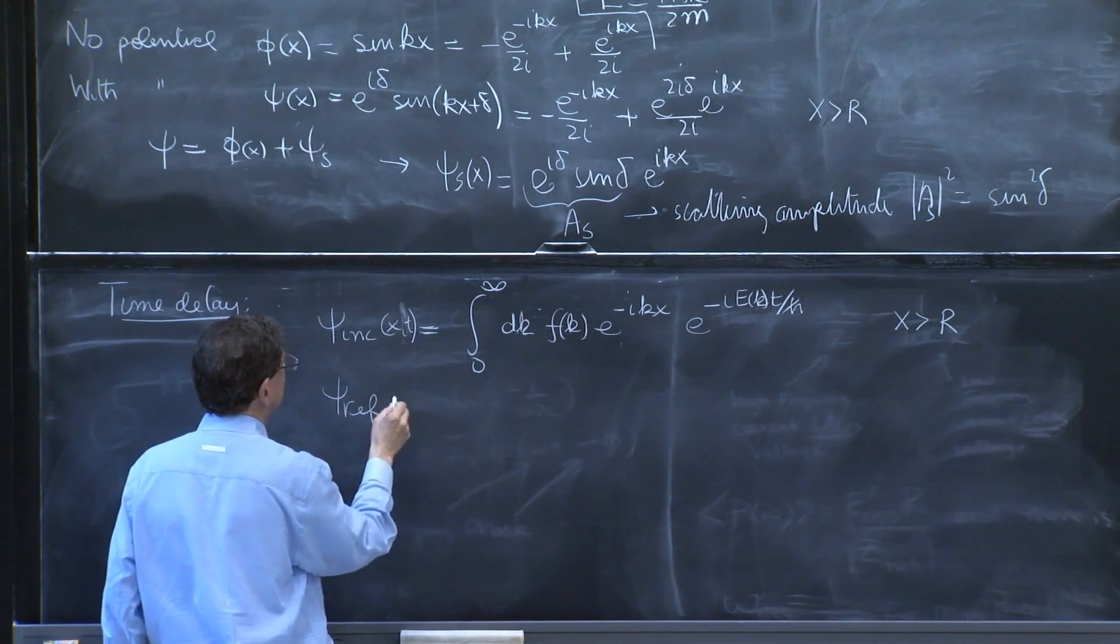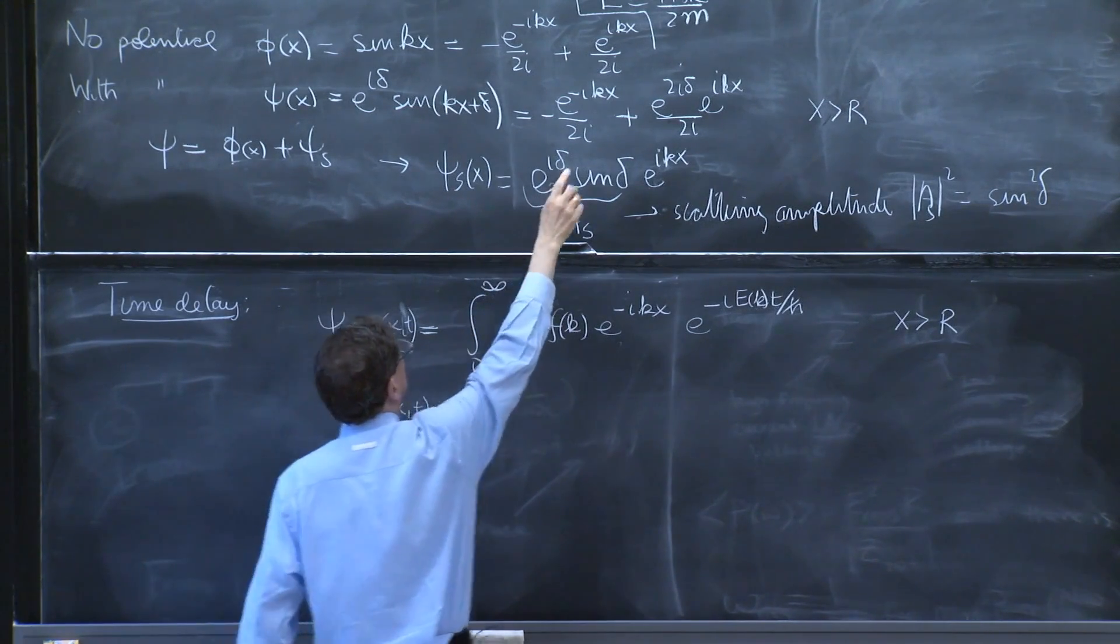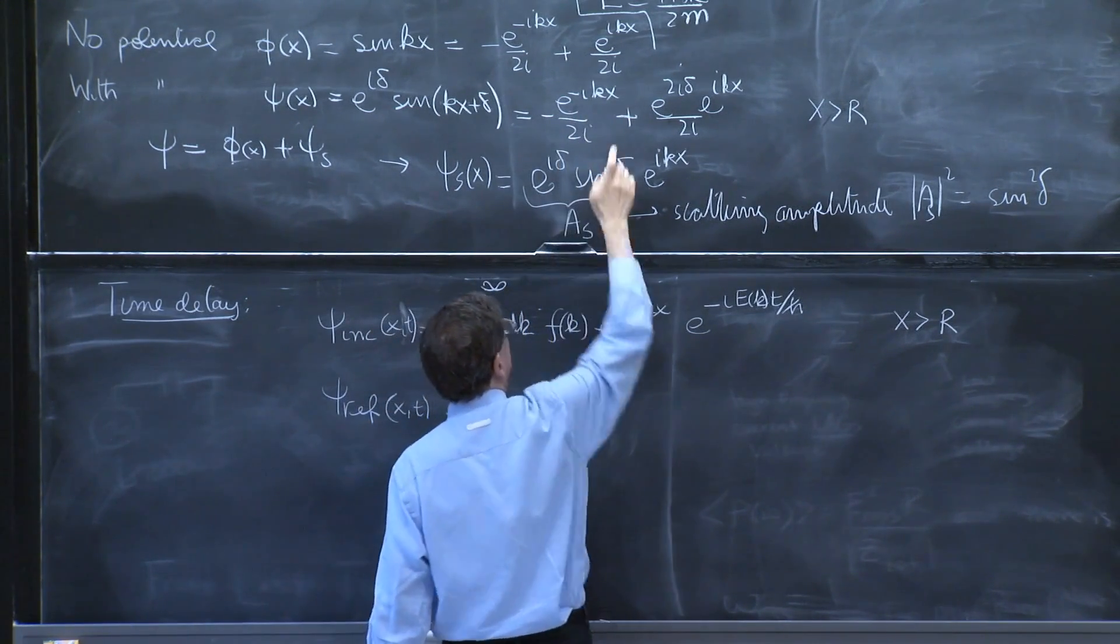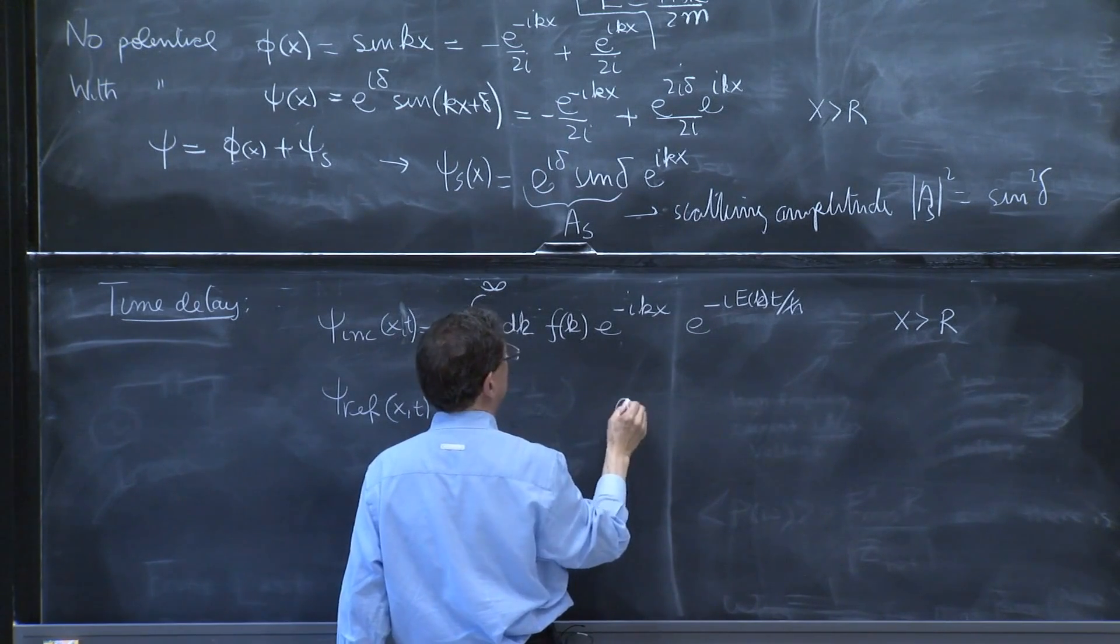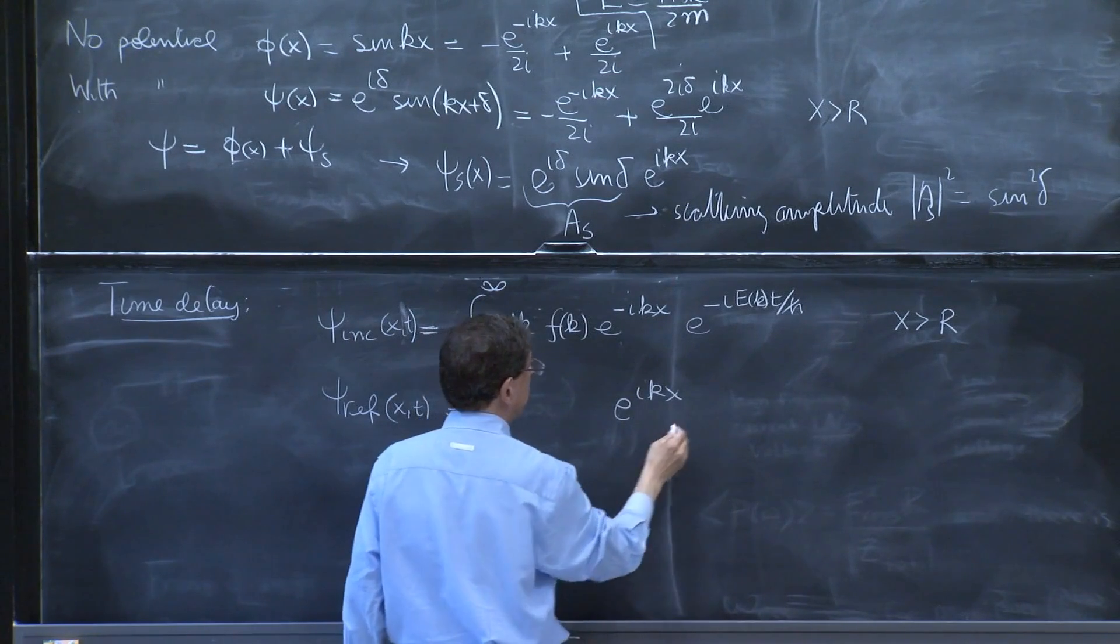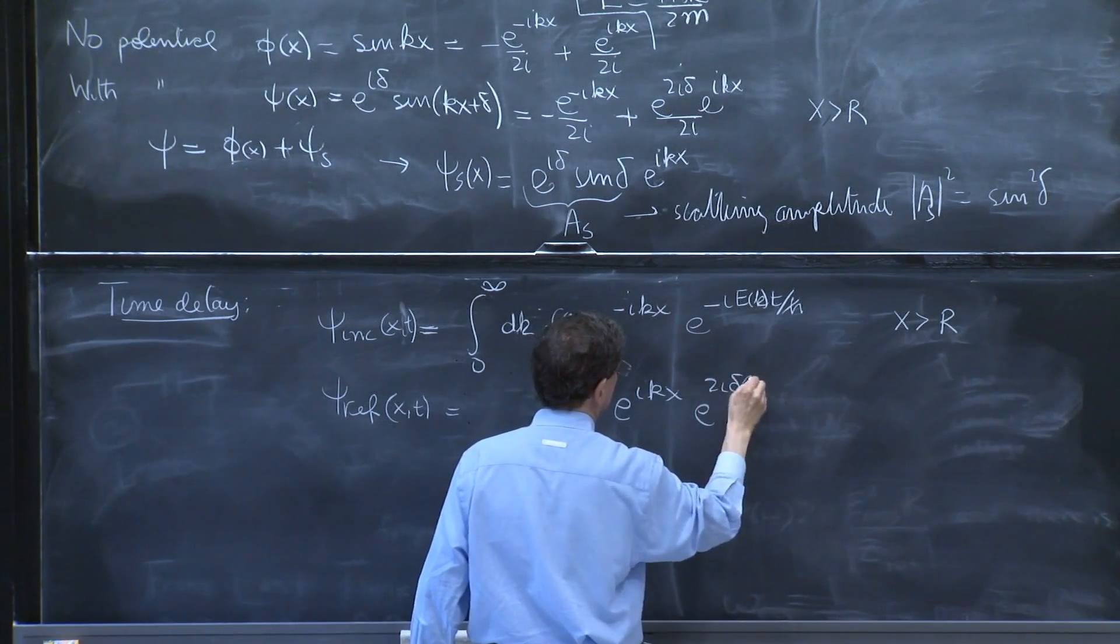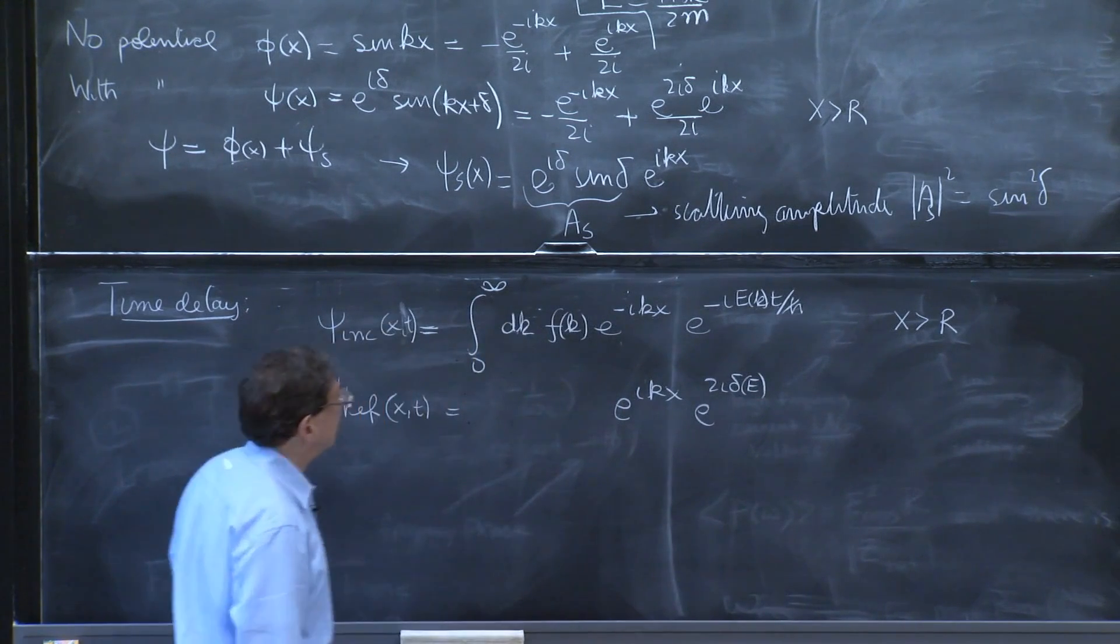This is the incoming wave. This is the reflected wave. And this is a solution. So by superposition, I construct the reflected wave of x and t. So for each e to the minus ikx wave, I must put now an e to the ikx.